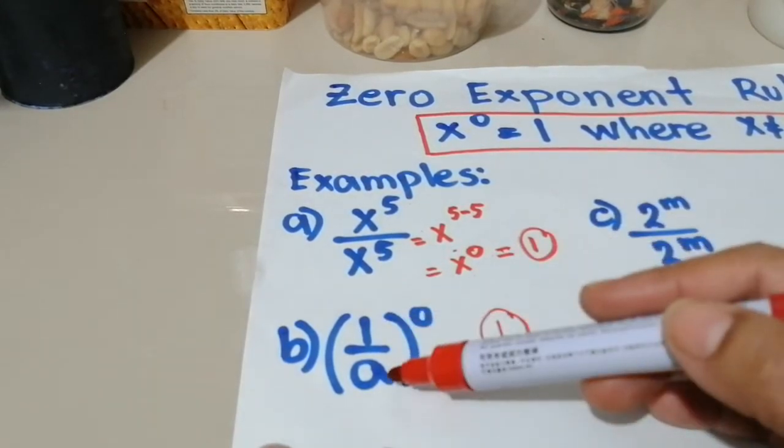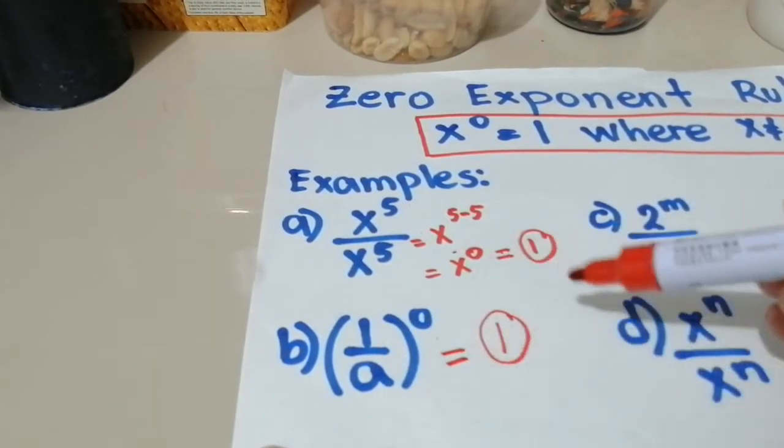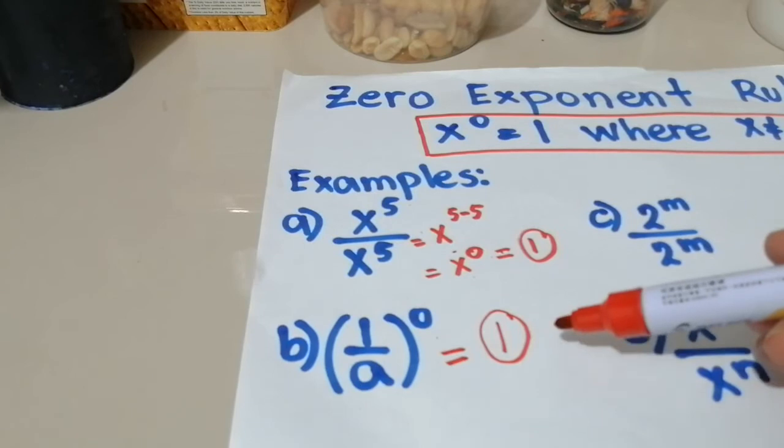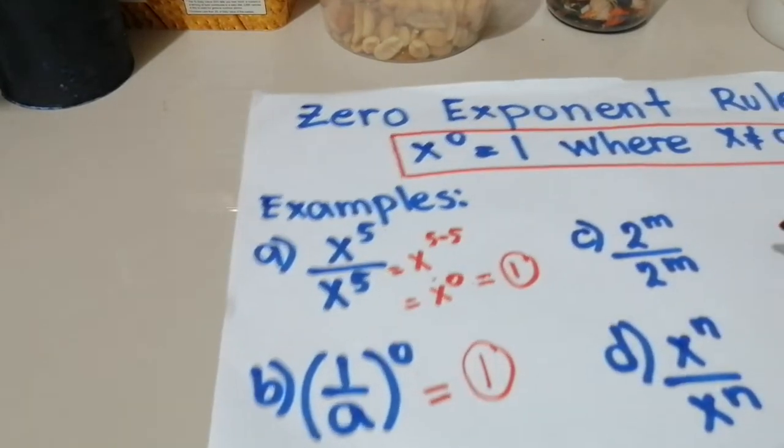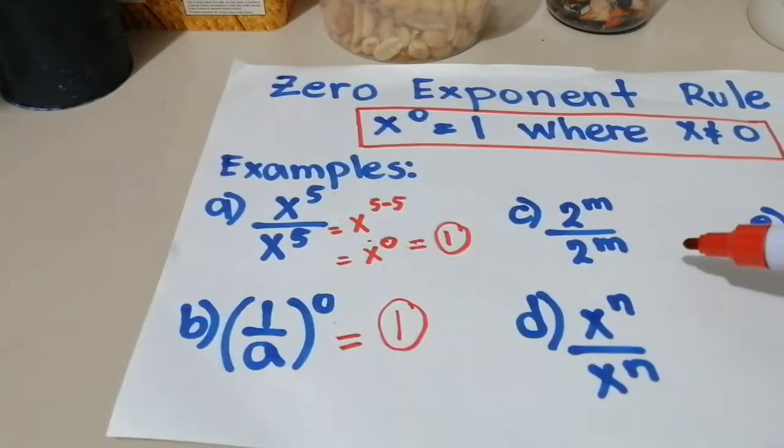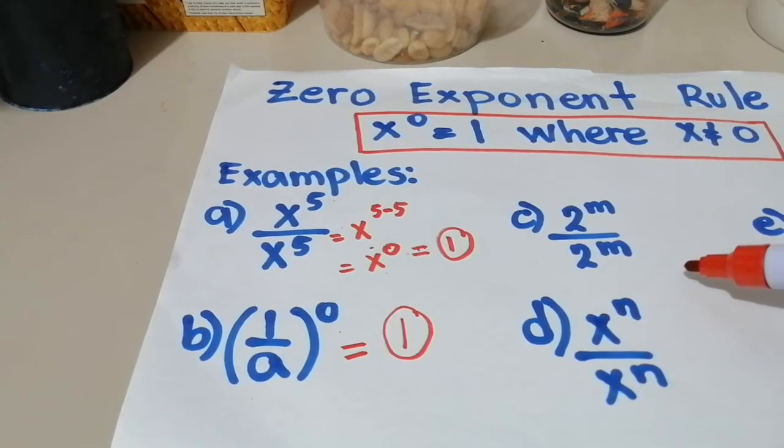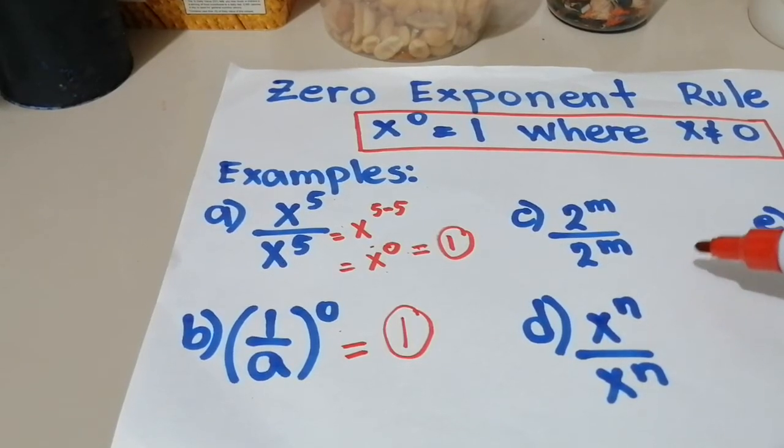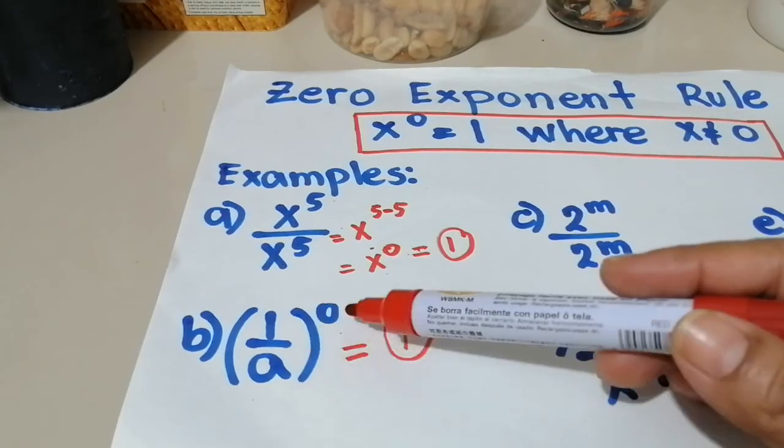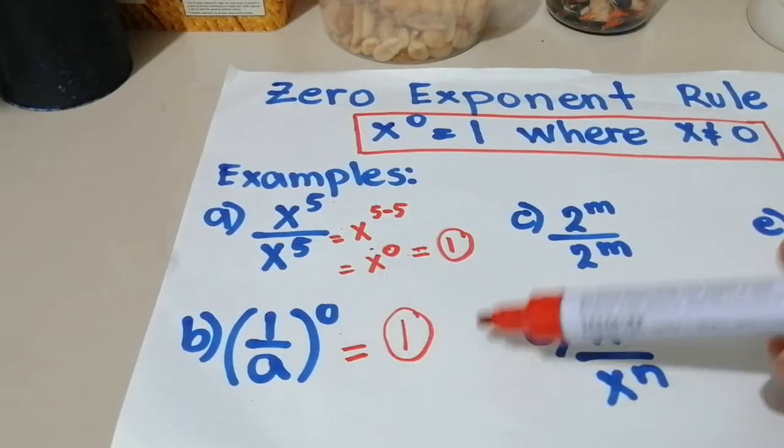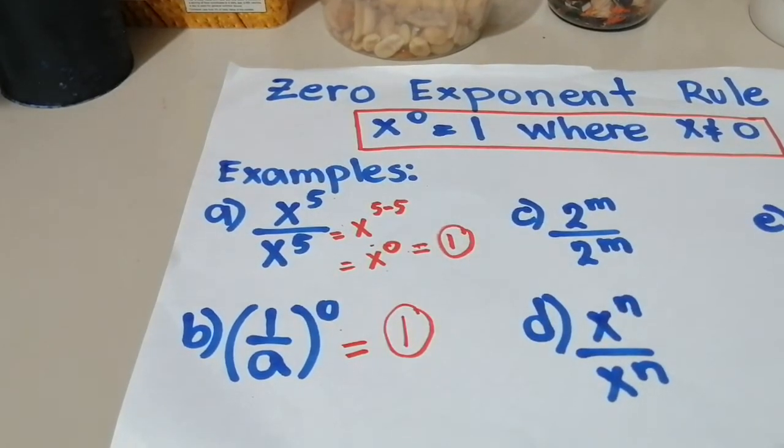Kahit pa ito fraction, dahil ang exponent ay 0, then 1 ang answer dyan. Kasi nga, sinabi that any number, when the exponent is 0, it's always equal to 1. So eto number yan, kahit pa fraction yan, dahil ang exponent niya ay 0, it's 1.